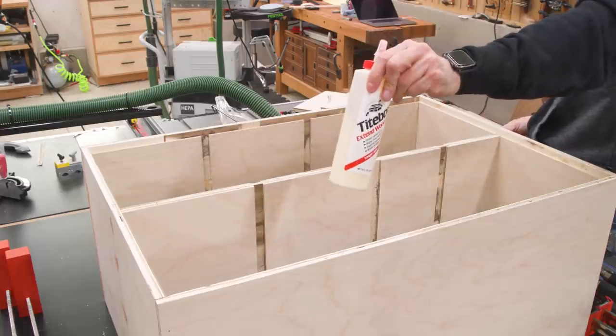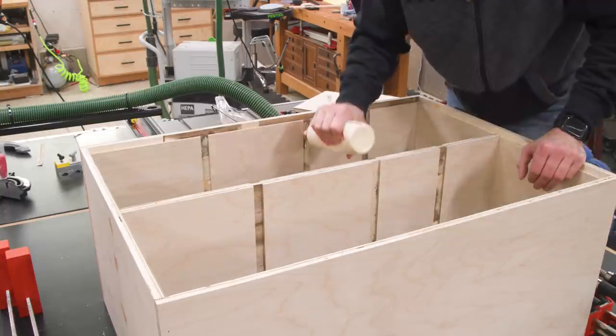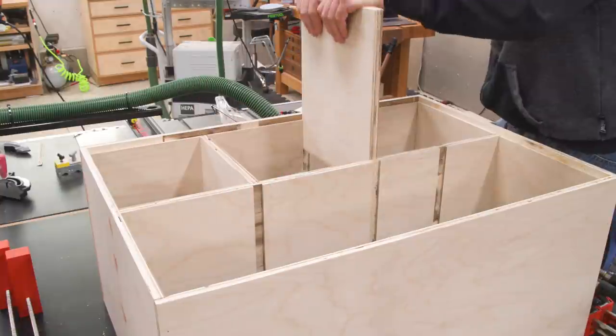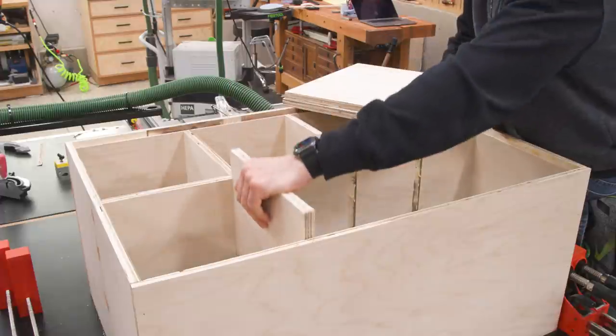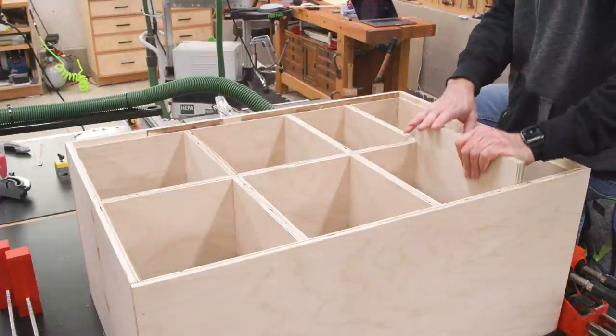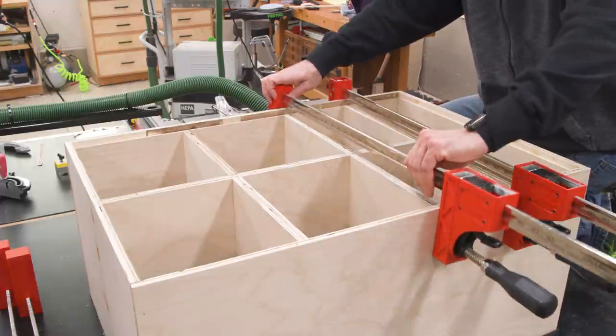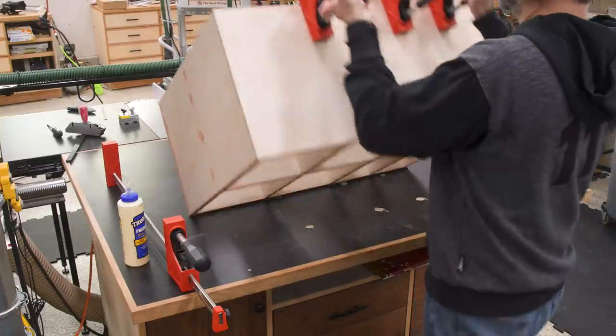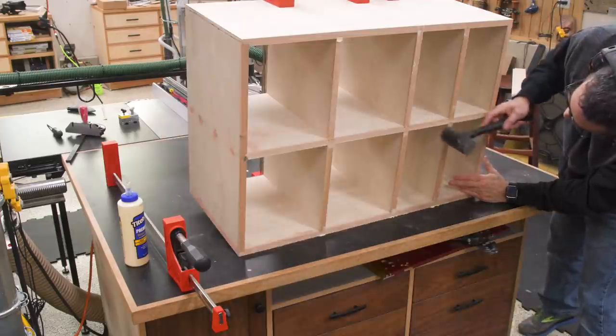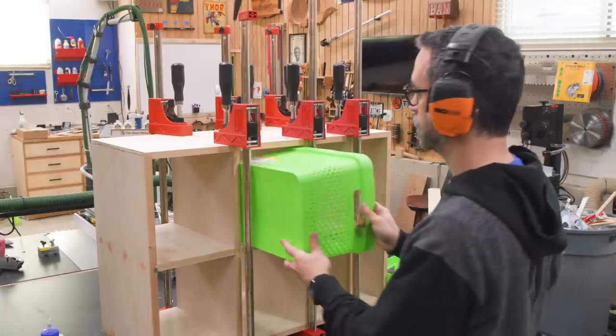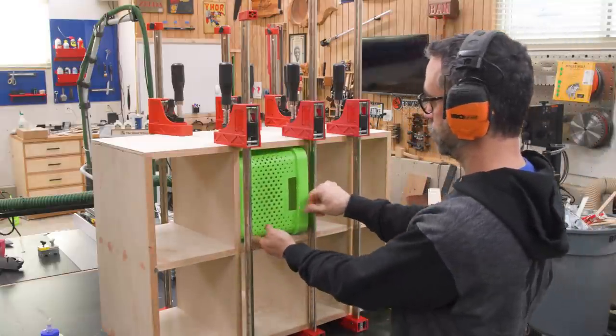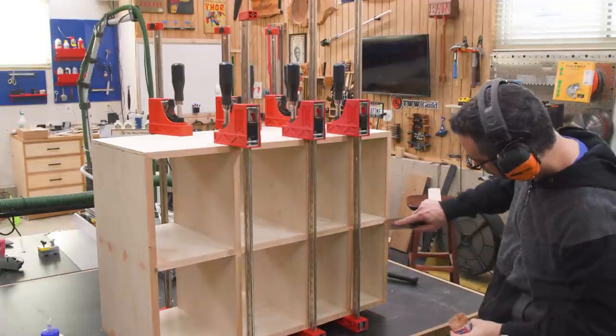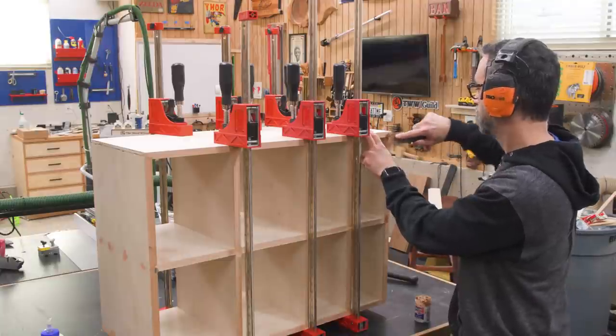For the interior shelves, I want a little bit more working time just in case I need to make adjustments. So I'll use Titebond Extend. To get all those dados to seat properly, it's a good idea to use some clamps. And not that I can do anything about it now, but it's a good idea to test the fit of the baskets. Whew, they fit. And don't forget to cover up any shoddy work and fill the nail holes.